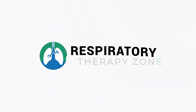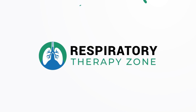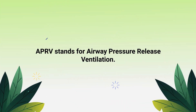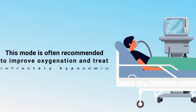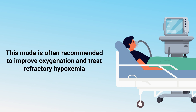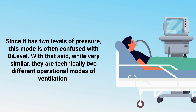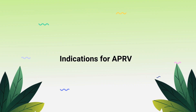APRV stands for Airway Pressure Release Ventilation. It's a mode of mechanical ventilation in which two levels of continuous positive airway pressure are applied with an intermittent release phase for spontaneous breaths. This mode is often recommended to improve oxygenation and treat refractory hypoxemia. Since it has two levels of pressure, this mode is often confused with bilevel — however, while very similar, they are technically two different operational modes of ventilation.